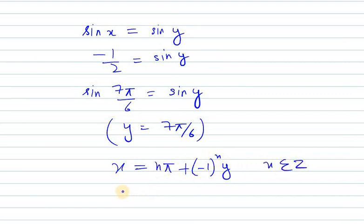Now we need to put the value of y. So x equal n pi plus minus 1 raised to power n times 7 pi by 6, where n belongs to z.